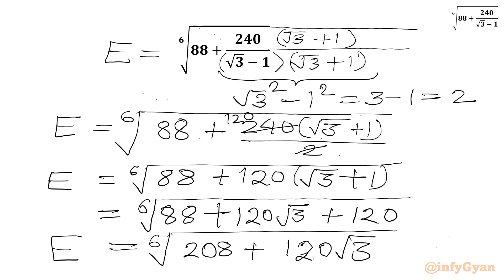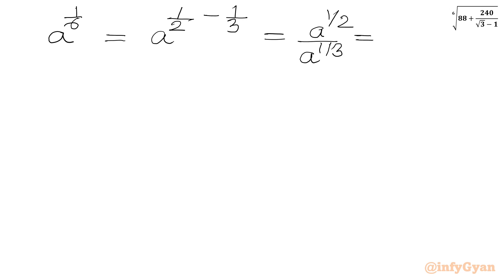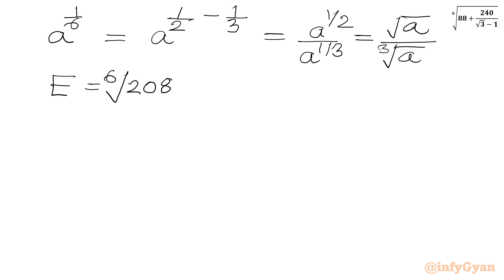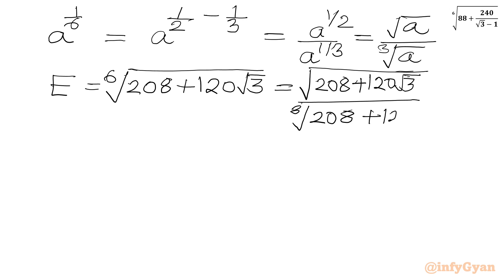Now 88 + 120 is 208, so we have 208 + 120√3. This is our expression so far. Using exponent law, the sixth root can be written as A^(1/6) = A^(1/2 − 1/3) = A^(3/6 − 2/6), which equals √A divided by ∛A. So our expression E — the sixth root of (208 + 120√3) — can be written as √(208 + 120√3) over ∛(208 + 120√3).